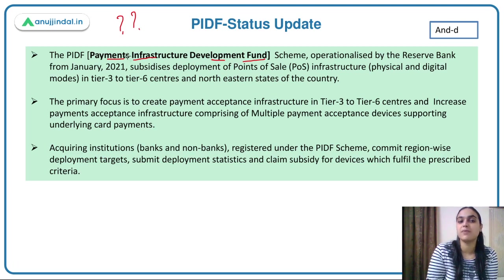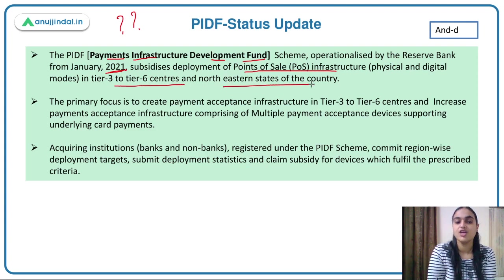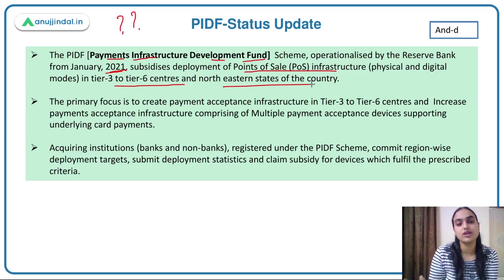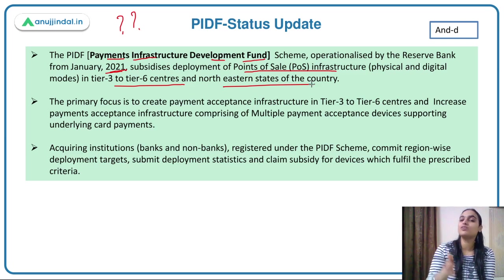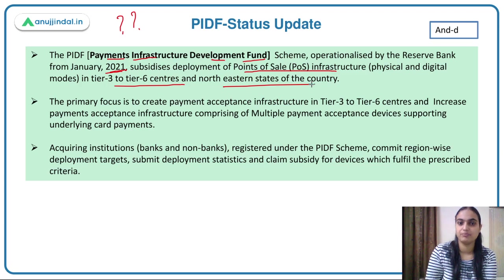The PIDF was operationalized by RBI in January 2021. It subsidizes the deployment of point-of-sale infrastructure, both physical and digital modes, in Tier 3 to 6 cities and northeastern states of the country — areas where payment infrastructure including UPI and QR codes needs to be developed. The objective of this fund is to develop payment infrastructure especially in Tier 3 to Tier 6 centers.